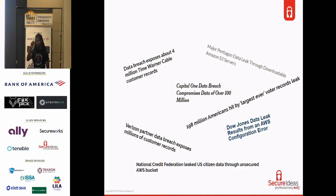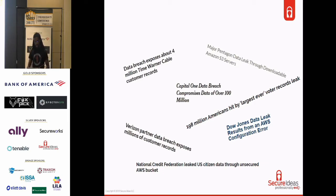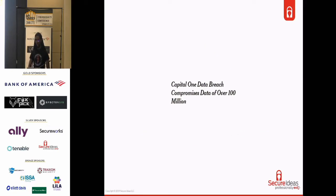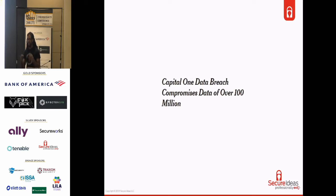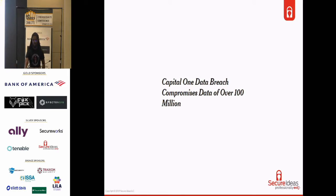I'm talking about curly brackets, key-value pairs. But I want to go over the 2019 Capital One breach. I want to emphasize that it is different, and the reason I want to go over this one is because it's not the usual open S3 bucket out on the internet.